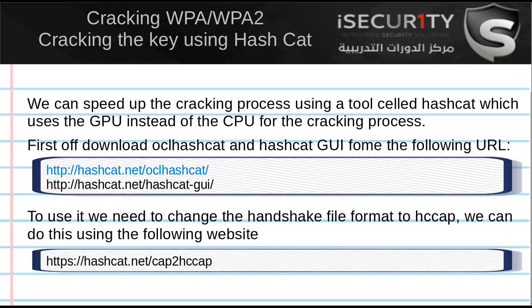In the previous two videos we saw how we can use aircrack-ng to crack the WPA key. The first method was using a wordlist straight through aircrack-ng, and the second method was after we convert the passwords to PMKs. However, in both methods we were using our CPU to do the work.